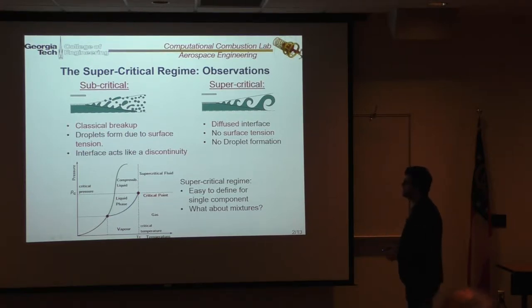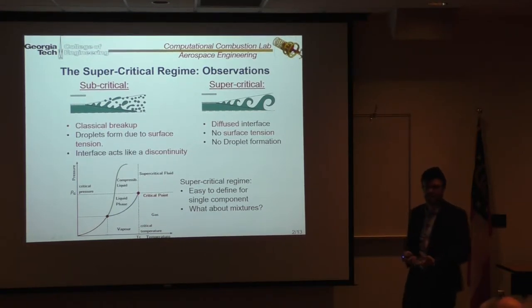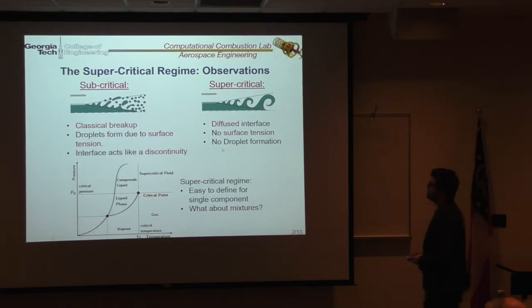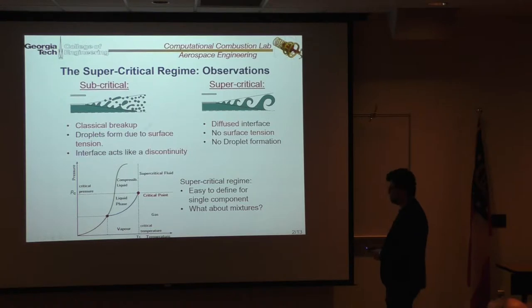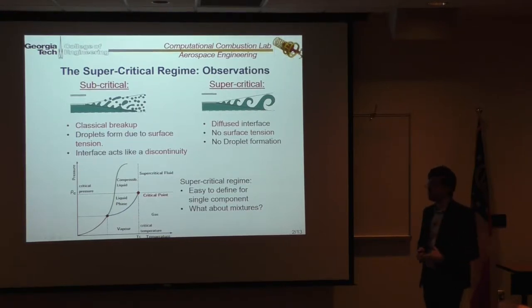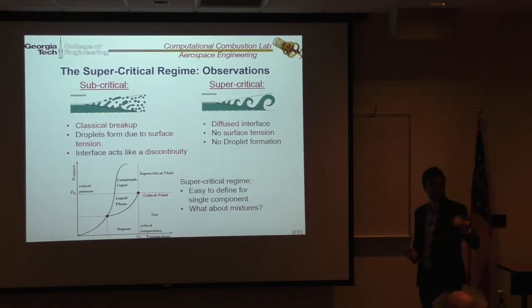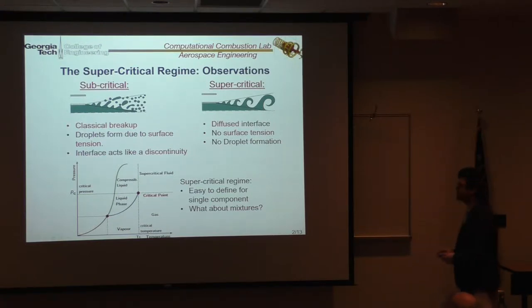Now, there is a substantial difference between what a subcritical condition and a supercritical condition mean. This is an open area of research. There are a lot of groups, even here at Georgia Tech, that are investigating this problem. The classical jet breakup that you see in a subcritical jet with droplet formation, evaporation, and all these things, they don't show up in a supercritical configuration. And so the interface appears more diffused. There is no surface tension and droplet formation is also reduced.